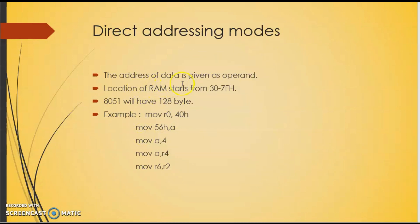The second addressing mode is direct addressing mode. It means the address of data is given as the operand. The RAM location starts from 30H to 7FH, and the 8051 has 128 bytes of RAM. For example, MOV R0, 40H — here 40H represents a RAM location, and the content of RAM location 40H is saved into R0.